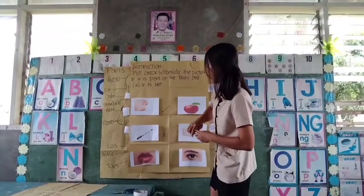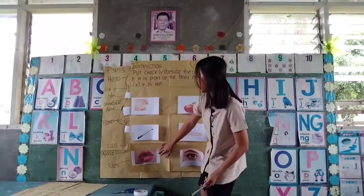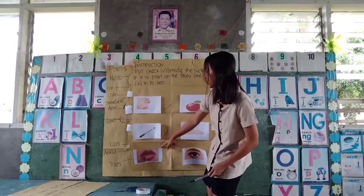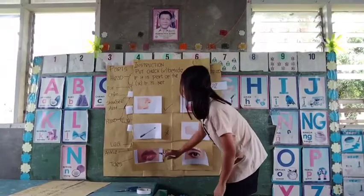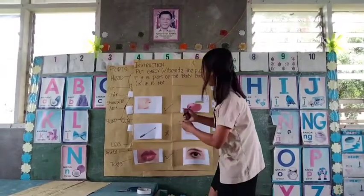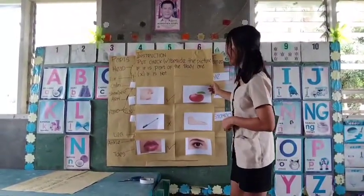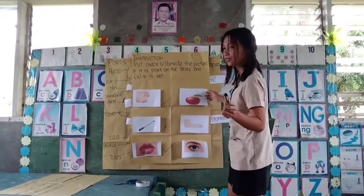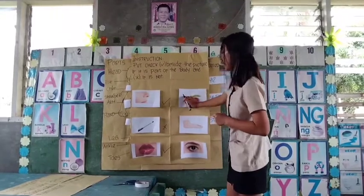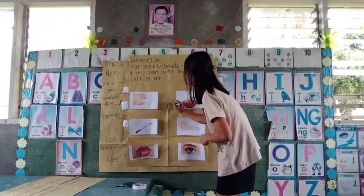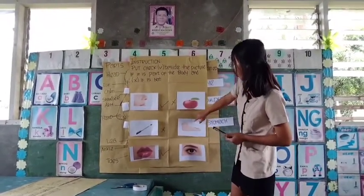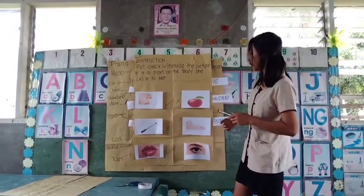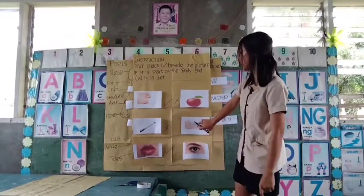And ito, how about this? Parte ba ito ng ating katawan? Yes. Parte ng ating katawan ito. Ang tawag dito ay lips. Matalino talaga kayo. Kaya, tsek natin siya. Ang sumunod na picture. Ito ay mapakita ba ng ating parte ng katawan? Hindi. Anong tawag dito? Apple. Apple to siya. Kaya, hindi siya parte ng ating katawan — X. Ito naman, parte ba ng ating katawan ito? Yes. Ito ay ating parte ng katawan. Ang tawag dito ay tongue. Ang galing naman.